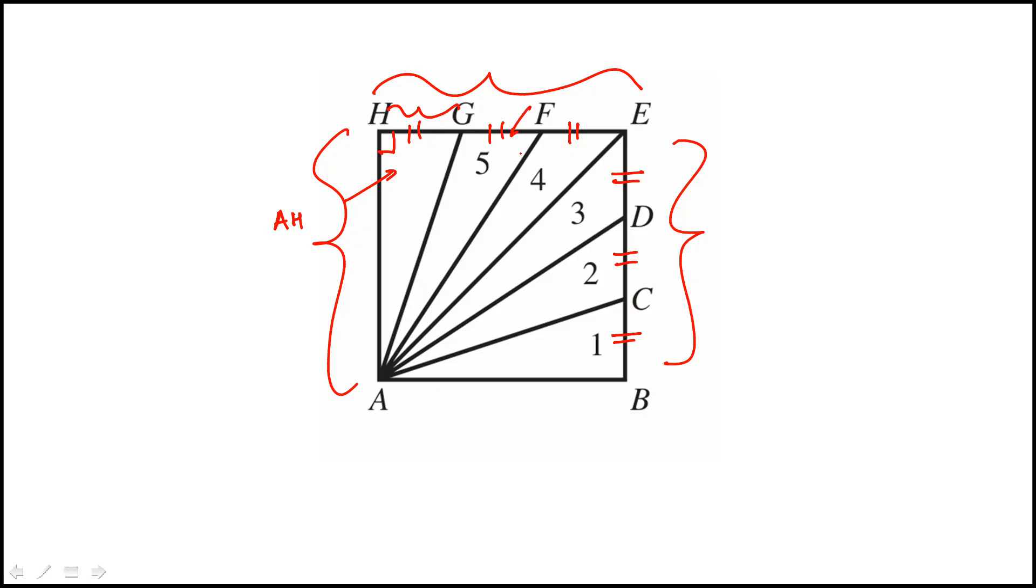If we look at triangle number 5, its base is GF, which is equal to that of GH. And the altitude would be—you would go from this point and drop a perpendicular line, which is same as AH. So triangle number 5 also has the same altitude as triangle AGH.